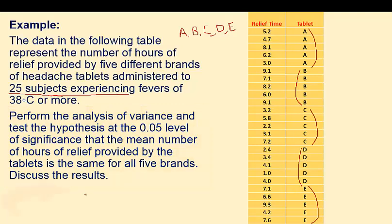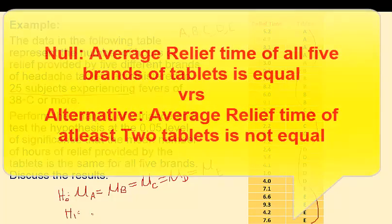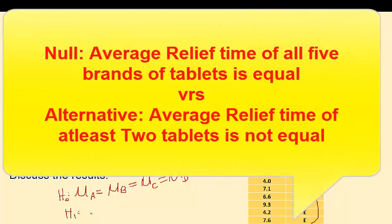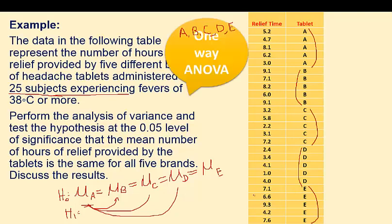The null hypothesis is that all means are equal. The alternate hypothesis is that the average relief time for at least two tablets is not the same. There are multiple comparisons here — tablet A with B, A with C, A with D — so at least two of them are not the same. This is one-way analysis of variance because we have one factor to test, and that factor is the tablet.